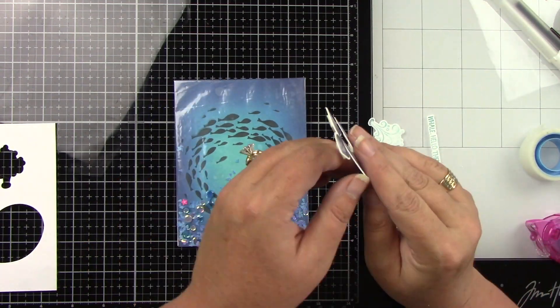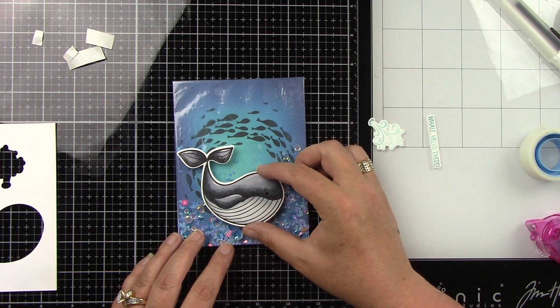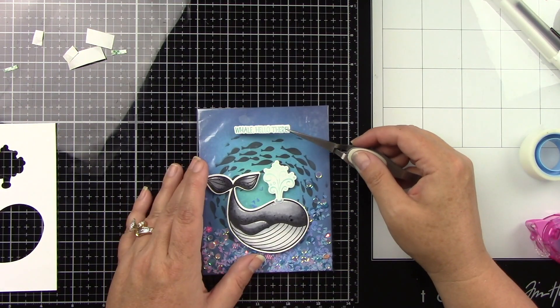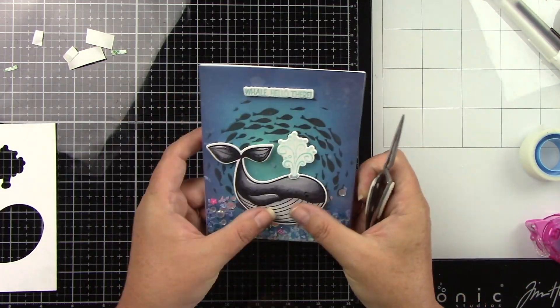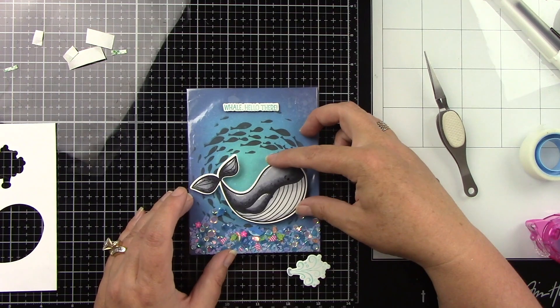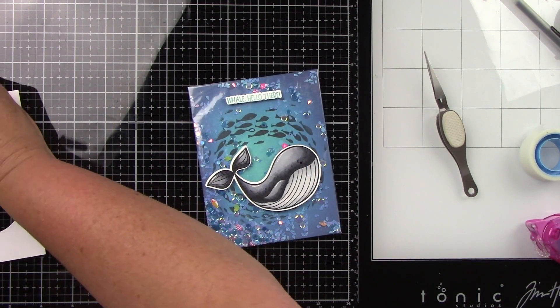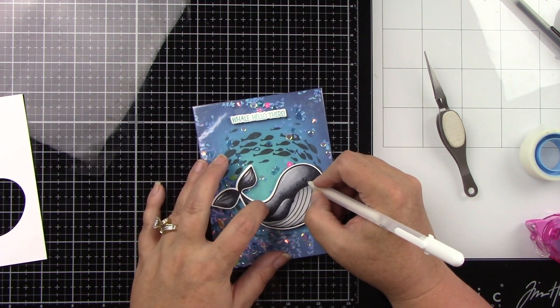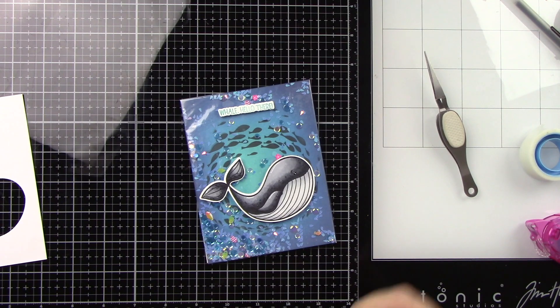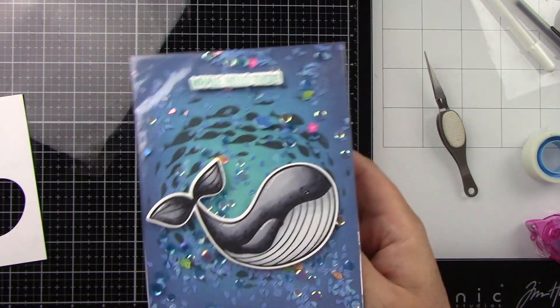I did want my whale with some foam tape behind him along with that sentiment. You guys know how much I absolutely love dimension. I just feel like it totally makes the cards. I'm going to put him down kind of at the bottom of those swirling fish. I like that placement of him, super cute. Let me come back in for that little white gel pen and then this card is completely finished.